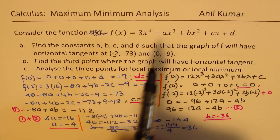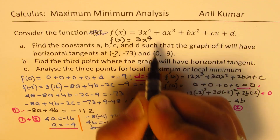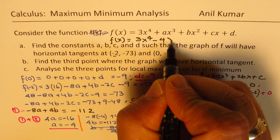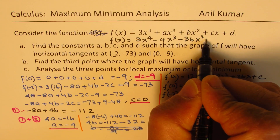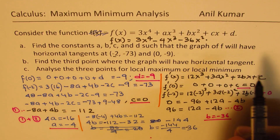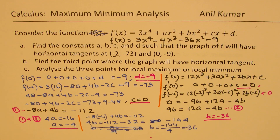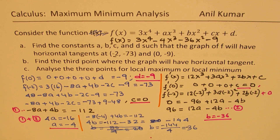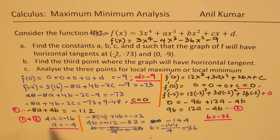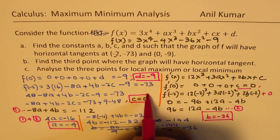We can now write the complete function: f(x) = 3x⁴ - 4x³ - 36x² - 9. To summarize our constants: a = -4, b = -36, c = 0, and d = -9.